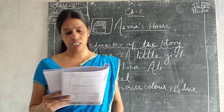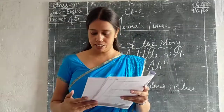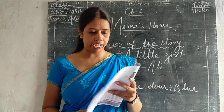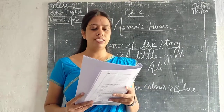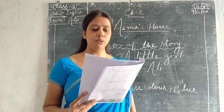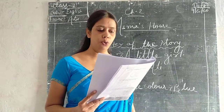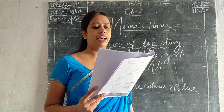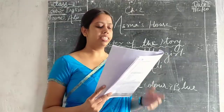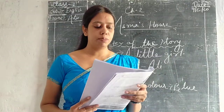This is your page number. This is Asma's house. It is blue. It has a garden and a small gate.